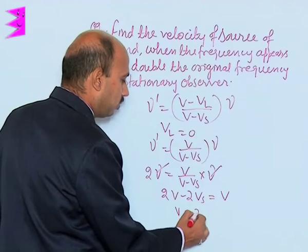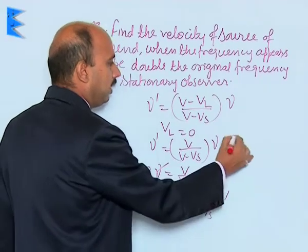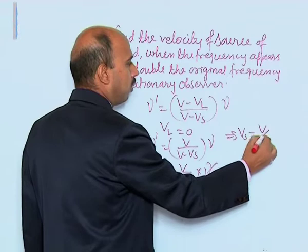We can get here V is equal to 2V s. So we can write here V s is equal to V upon 2.